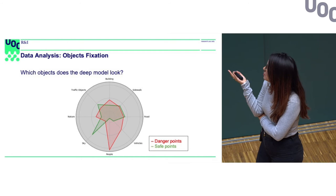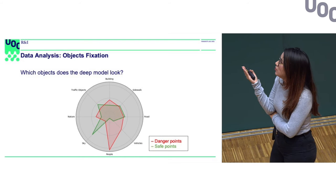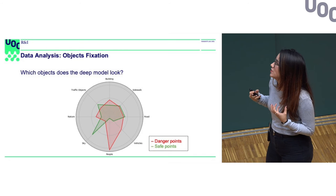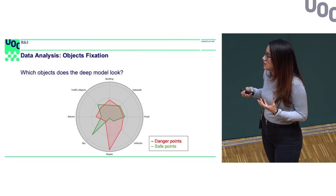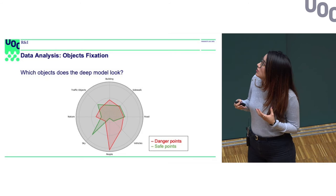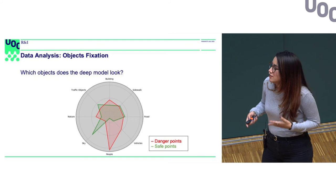By combining these two sources of information, we can gain insight into how a dangerous urban scene looks versus a safe one. For dangerous urban scenes, there are more people, vegetation, and buildings all together along with vehicles in the same scene — meaning the scene is more dense and disordered. For safer points, more sky and more visibility on roads, sidewalks, and traffic signs indicate a cleaner scene.